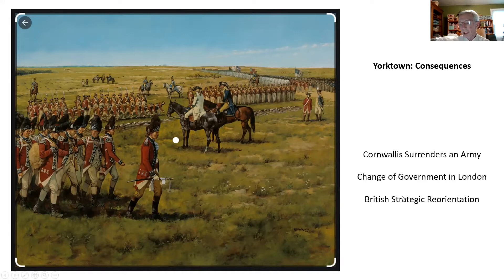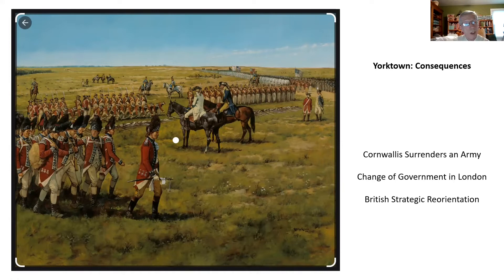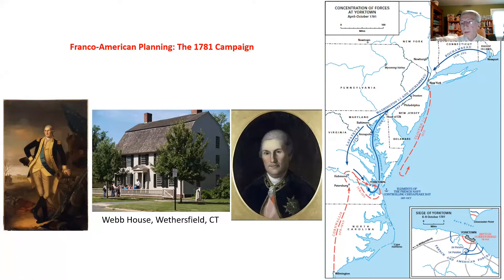That's our overview of the campaign. And the planning for what became the Yorktown campaign indeed happened in Wethersfield, Connecticut, in the Joseph Webb House. So in May of 1781, George Washington, moving out of the Hudson Highlands where the American Army was located, traveled into Connecticut to Wethersfield. And from the other direction, the Count de Rochambeau would travel from Newport, Rhode Island, and they'd meet up roughly halfway in Wethersfield, Connecticut, where they held a conference to decide the strategy.